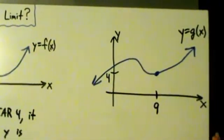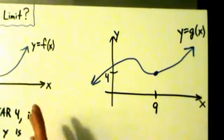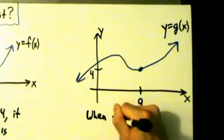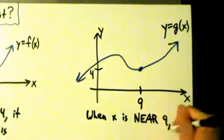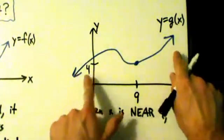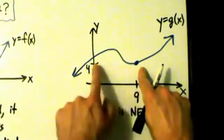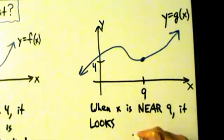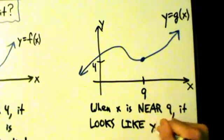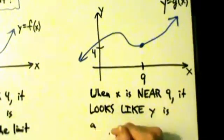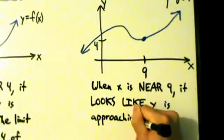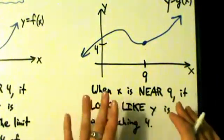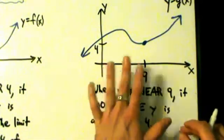This example is a little simpler because there are no holes, no missing pieces, but the process is going to be exactly the same. Let's take a look at what happens near x equals 9. When x is near 9, if we follow along the curve from either the left or the right, as x gets closer and closer to 9, it looks like y is getting closer and closer to 4. So when x is near 9, it looks like y is approaching 4. And yes, when x equals 9, y actually is 4, but that doesn't matter for the limit — it just tells you what's happening around or near the point.